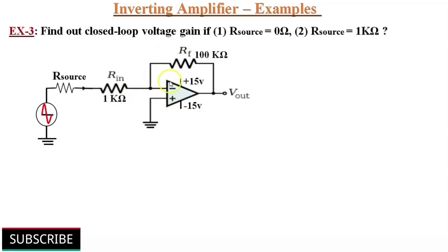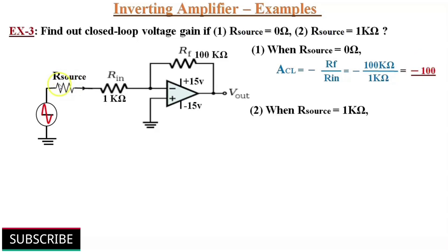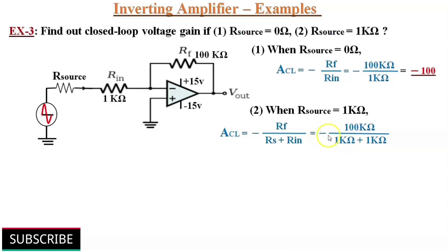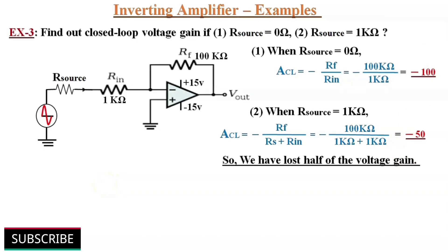Find out the closed loop voltage gain for the inverting amplifier shown in the figure, if source impedance Rsource is equal to 0 ohms and Rsource is equal to 1 kilo ohm. When Rsource is equal to 0 ohm, the closed loop voltage gain ACL is equal to minus RF by Rin: 100 kilo ohms feedback resistance divided by 1 kilo ohm input resistance, that gives voltage gain as minus 100. Note that we have lost half of the voltage gain because of source impedance. That's all about op-amp as inverting amplifier and its voltage gain calculations.